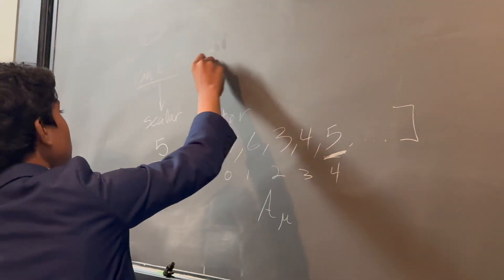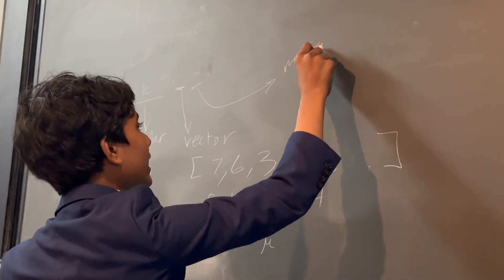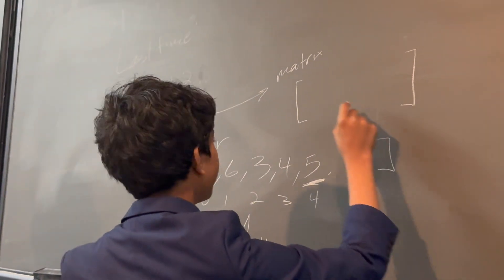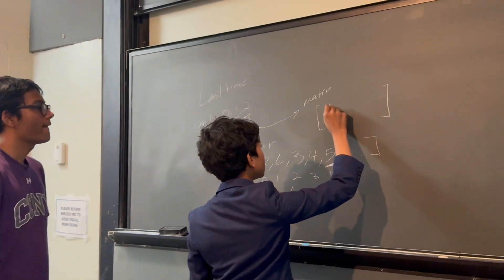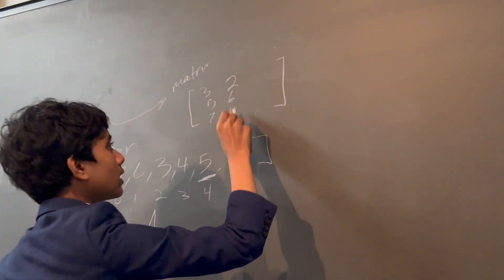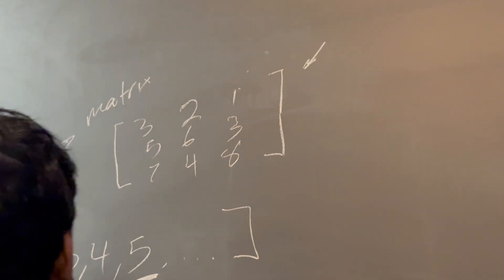Then a rank 2 would be a matrix, kind of like an array of arrays. So, or a vector of vectors, where we get 3, 5, 7, for example, 2, 6, 4, 1, 3, 4. So, this is an example of a matrix.